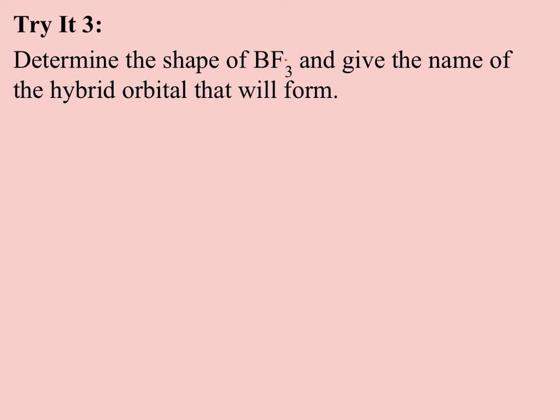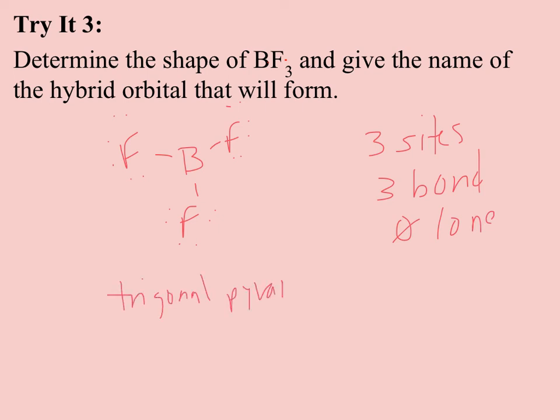So pause and try BF3. So if I sketch it out here, BF3 just has the three attached. The fluorine has its lone pairs, but now boron only has three sites, three bonding pairs, or three pairs attached to it. All three happen to be bonding pairs with no lone pairs. So now this is what's called a trigonal planar because there's no lone pair taking up more space than the bonding pairs. And so this is just an SP2 hybrid orbital.